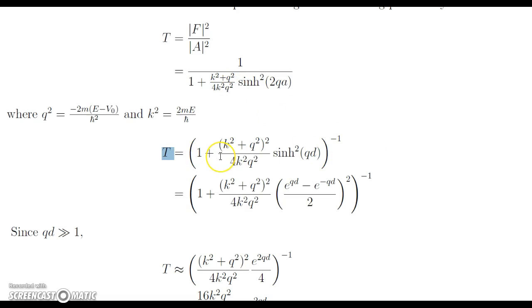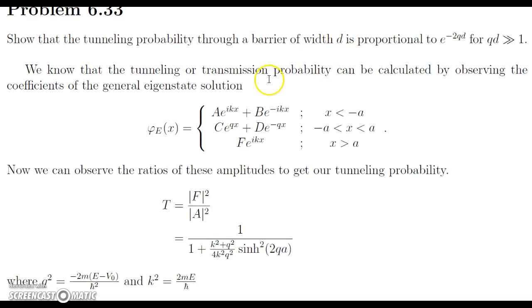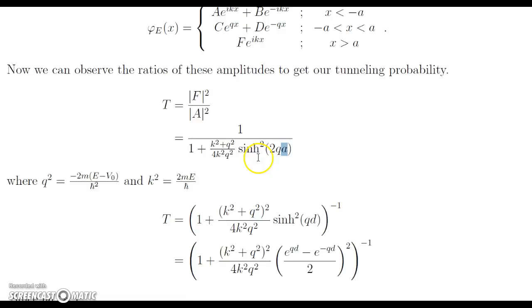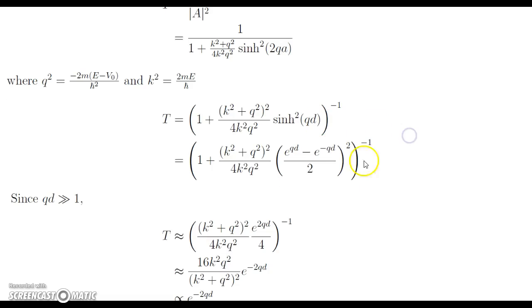So we have this here, and what I did for this is originally I just flipped it over. I also plugged in, since here our barrier width is d, and in this case this half of it is, since we're going from negative a to a, two times a is going to be the whole width d. So I just substituted that in, and then now we see this qd where we're going to have to apply our given condition.